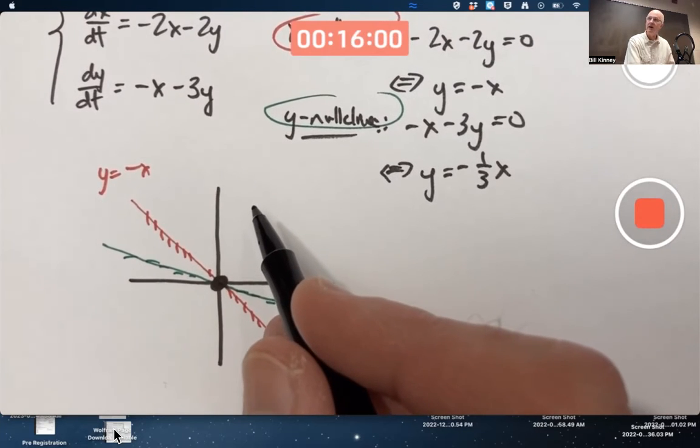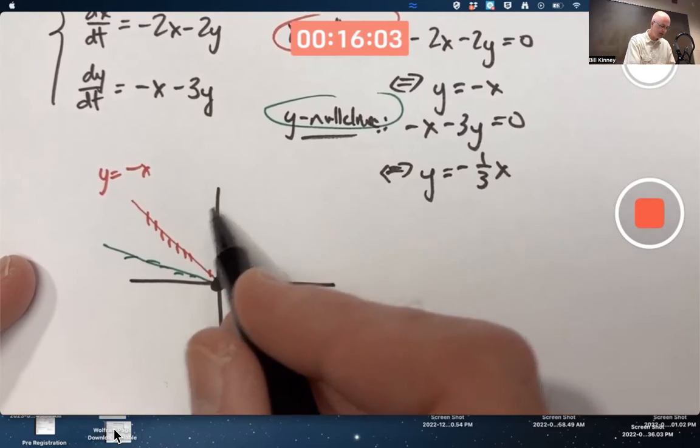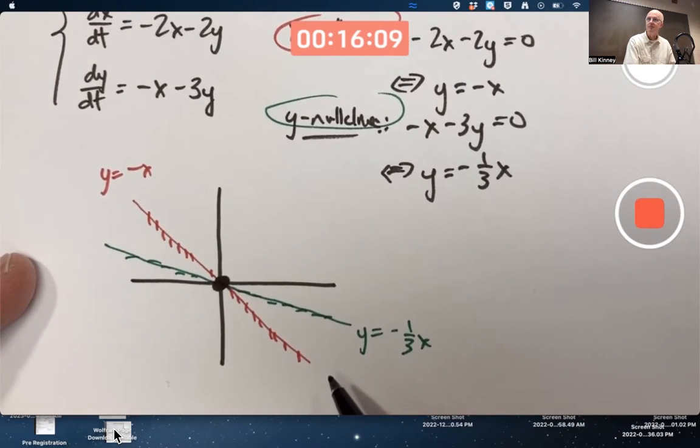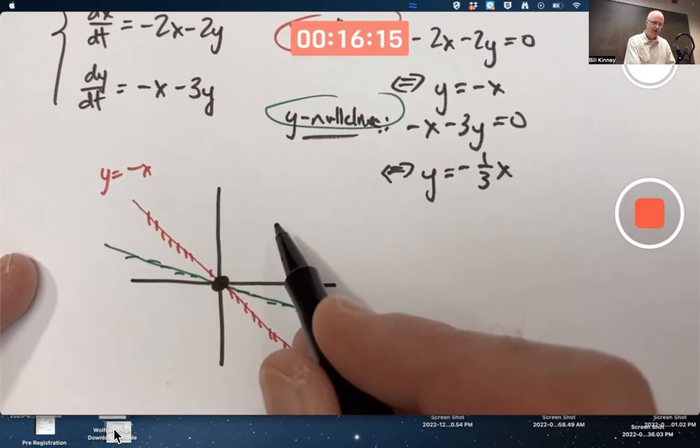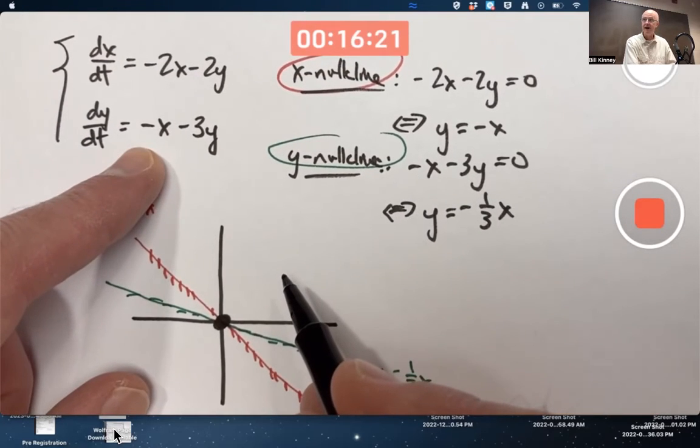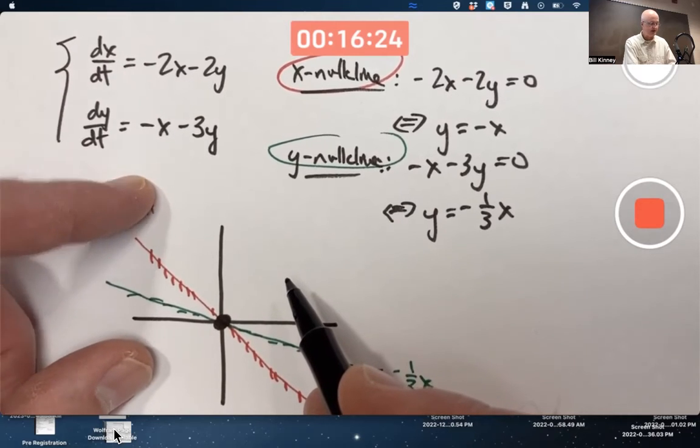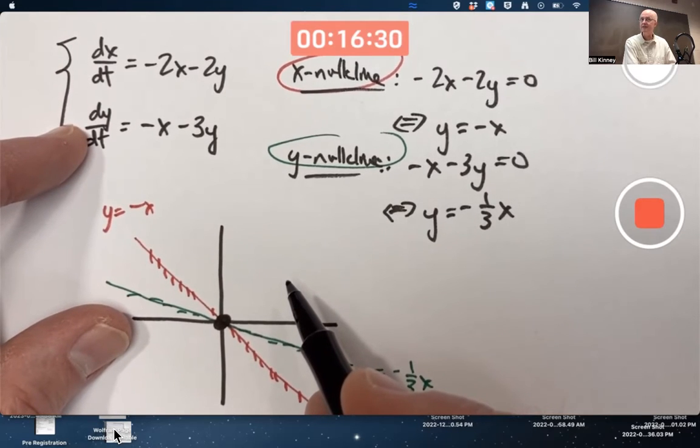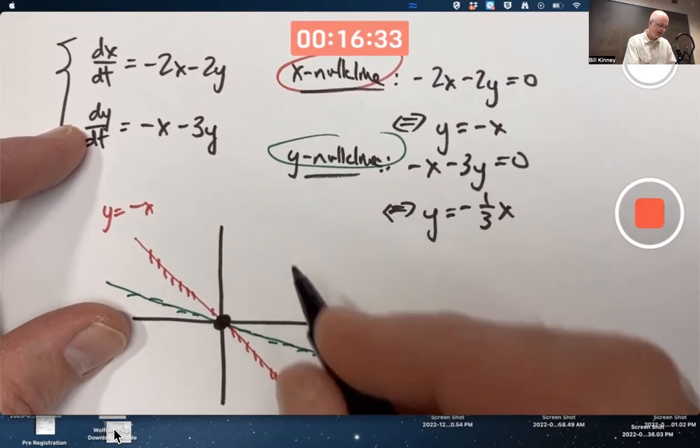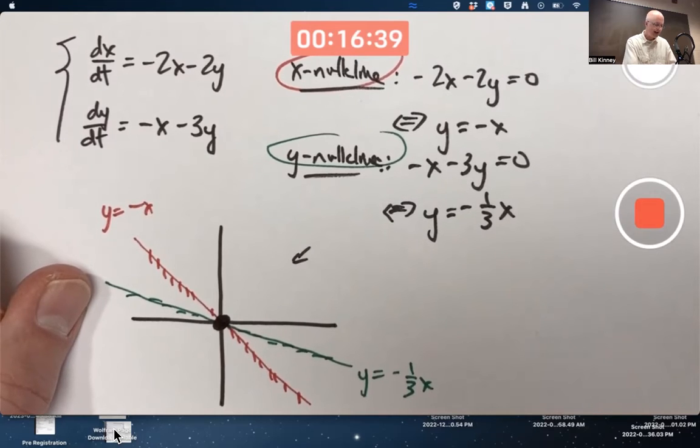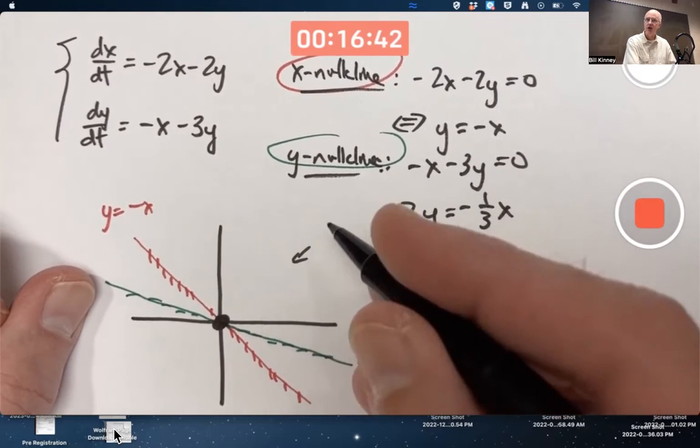There's four regions in the plane that the null clines separate the plane into here. The region up here, a region down here, and these two wedge regions here and here. To figure out the direction of the vector field, pick an arbitrary point in each of those regions. If I imagine picking a point up here where both x and y are positive, and plugging that point into the vector field, I'll get negative numbers, right? If x and y are positive, these are going to be negative numbers. Meaning dx/dt and dy/dt for solution curves will be negative. Both x and y are decreasing. Solution curves have to go to the southwest.